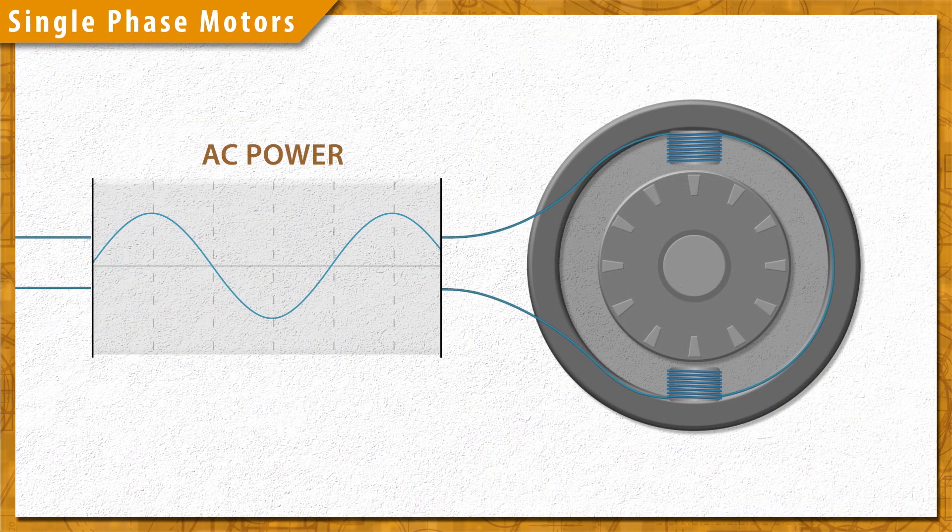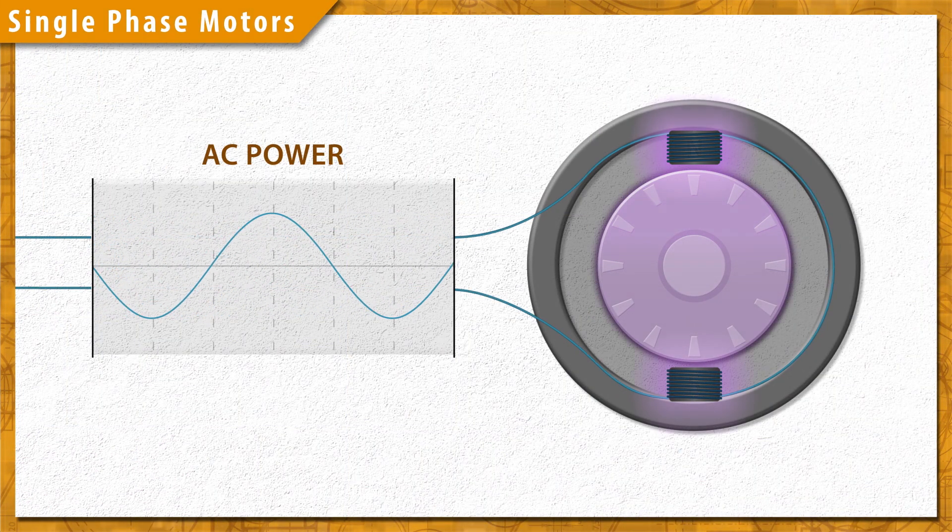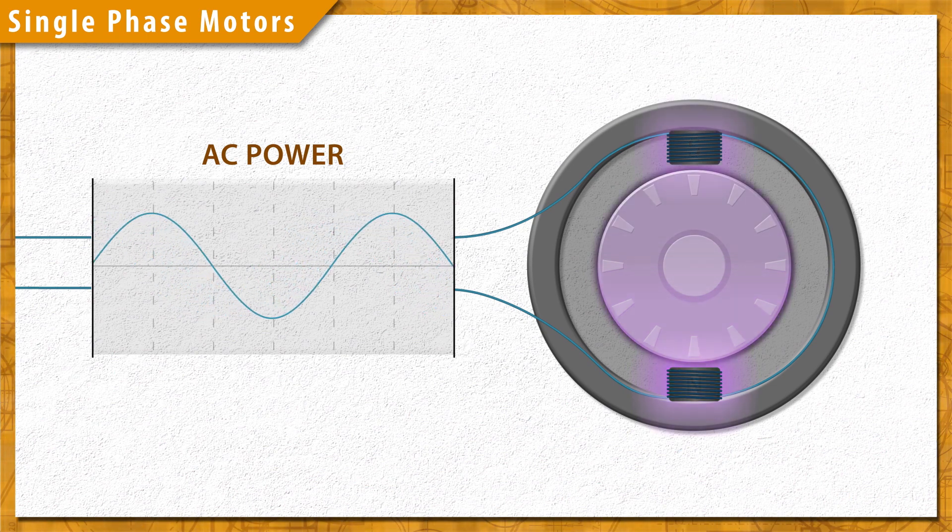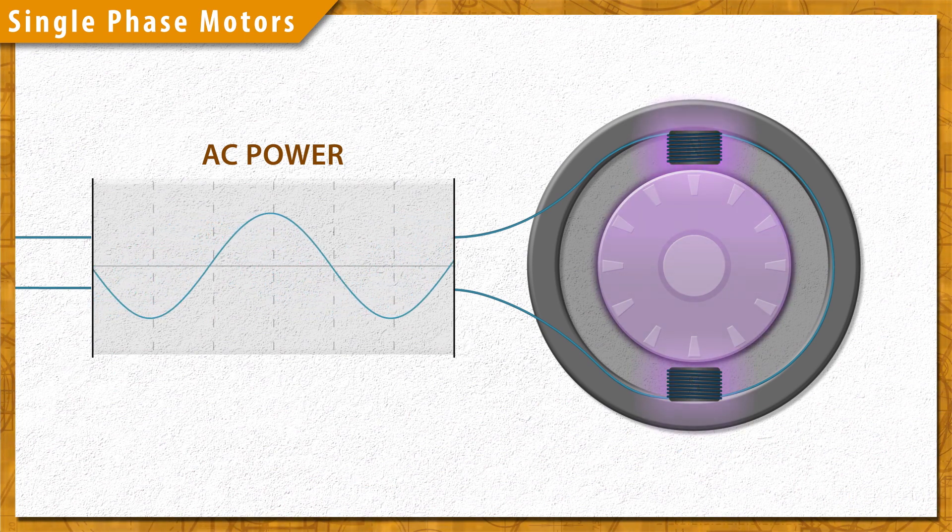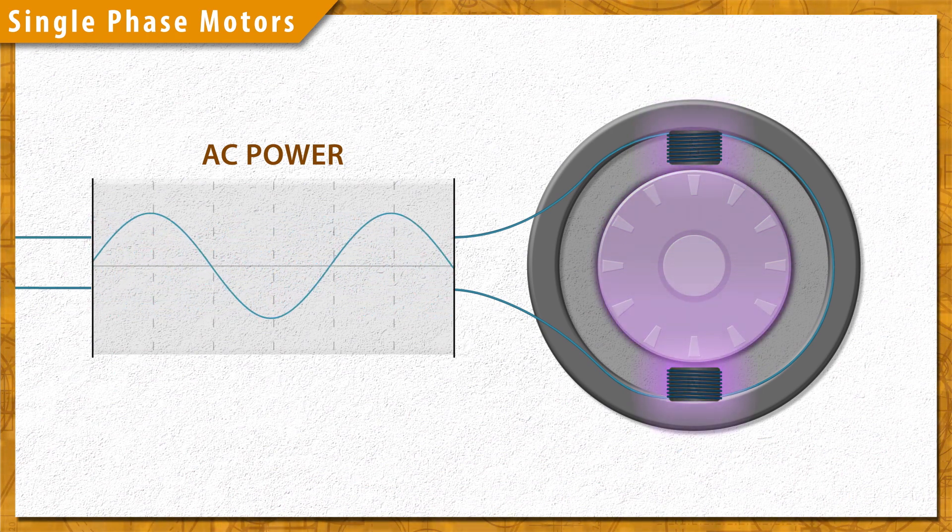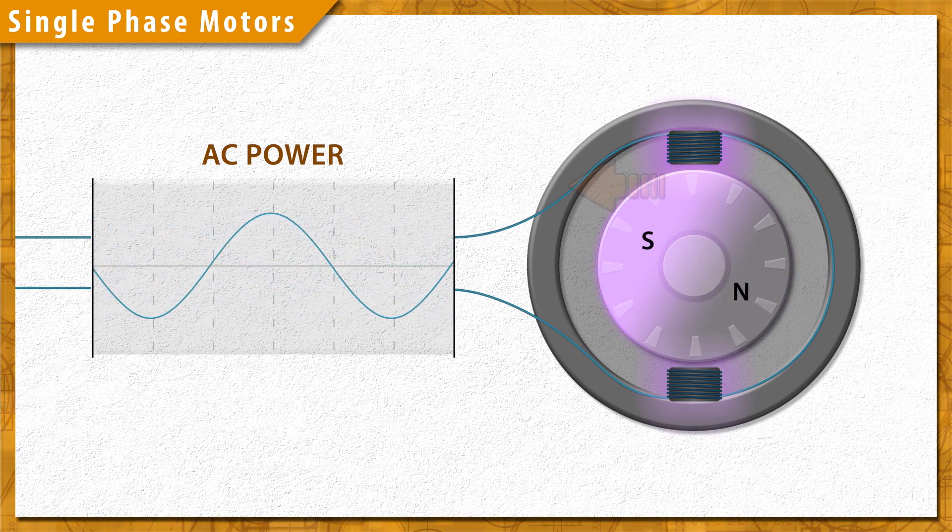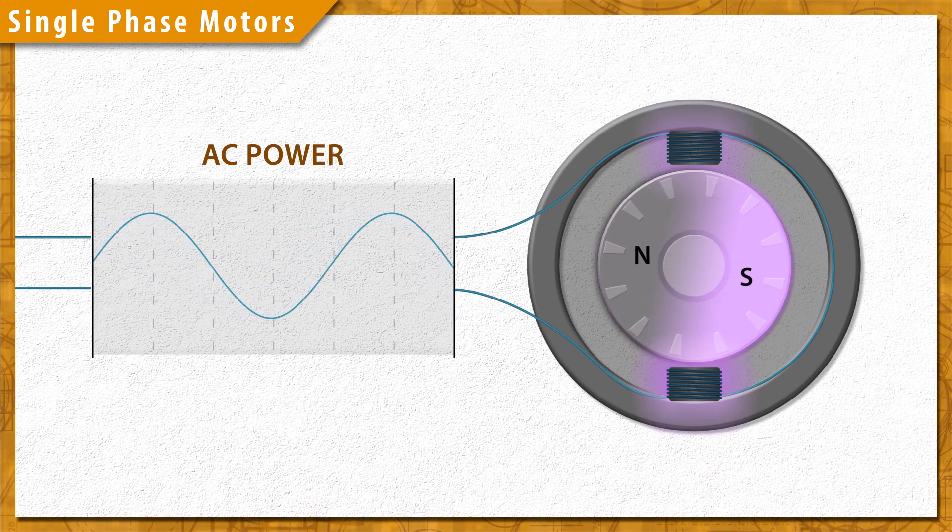In comparison, single phase motors are not self-starting. With only one pair of windings there is no torque and no rotating magnetic field. The magnetic field simply oscillates back and forth which keeps the rotor locked in place. However if you push a rotor by hand it will continue to spin, but this is not very practical.